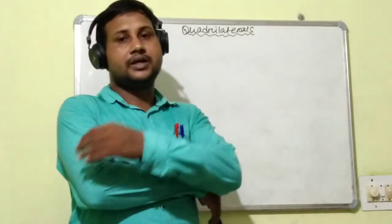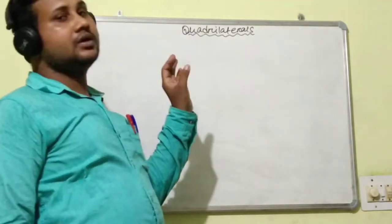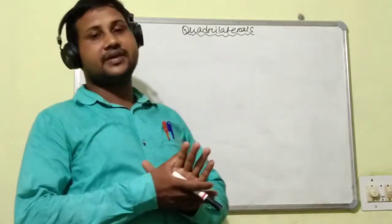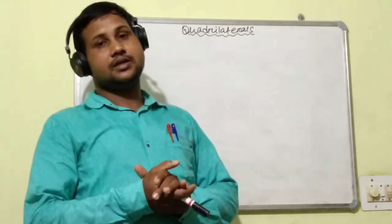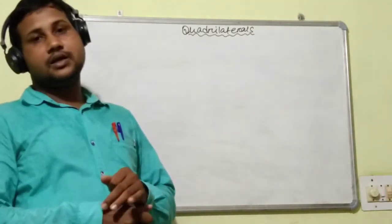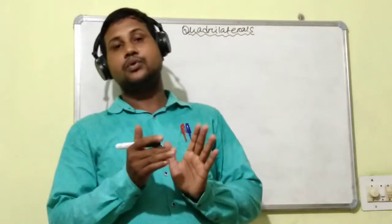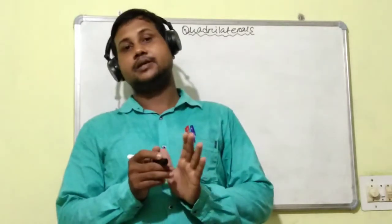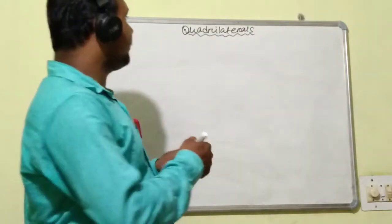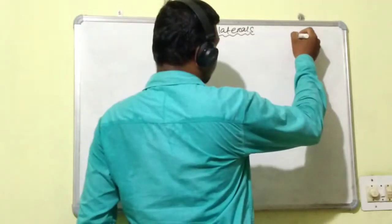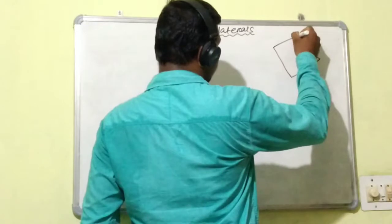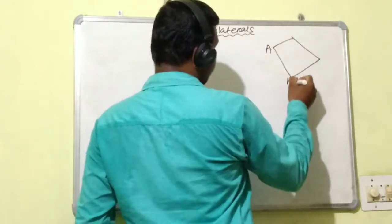Here we will discuss about quadrilaterals and different types of quadrilaterals. Dear students, you know what is a quadrilateral? A quadrilateral is a four-sided closed figure. So I am constructing one figure of a quadrilateral.